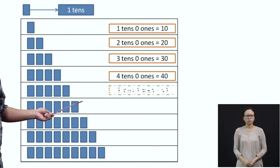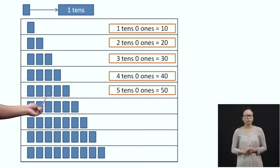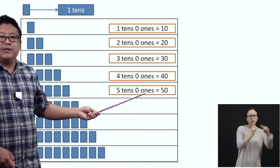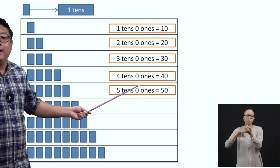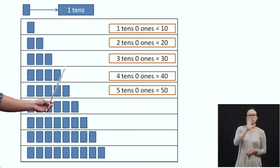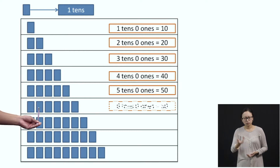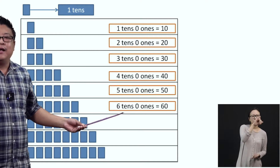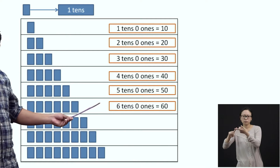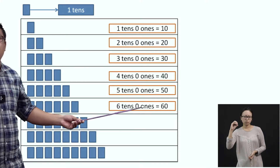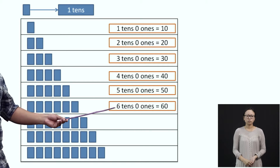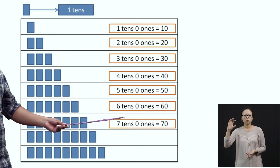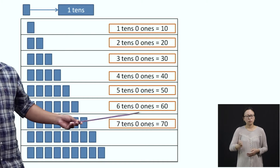In the next row, we have five blue strips. So, we will call it as five-tenths, zero-ones. When you combine five and zero, you get fifty. In the next row, we have six blue strips, which indicates six-tenths and zero-ones. When you combine six and zero together, you get sixty. Next, we have seven-tenths, zero-ones, which is equal to seventy. Similarly, eight blue strips means eight-tenths, zero-ones, and when you combine, you get eighty.